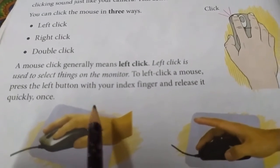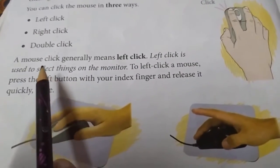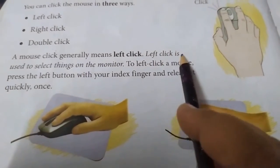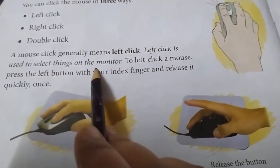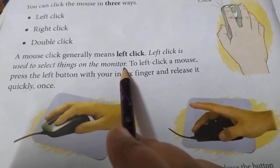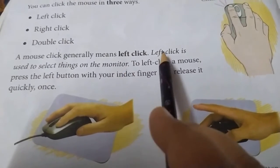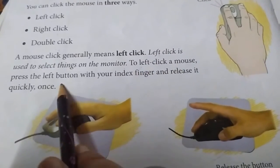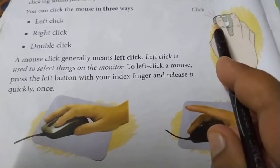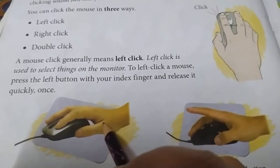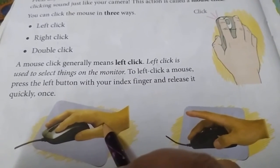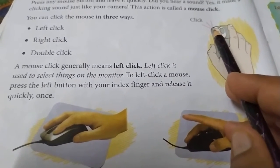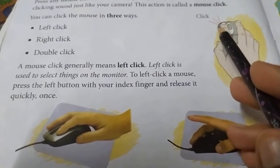Now, what is the work of the left click? Left click is used to select things on the monitor. To left click a mouse, press the left button — this is the left button — with your index finger once and release it quickly.